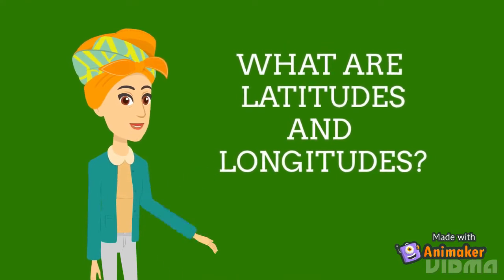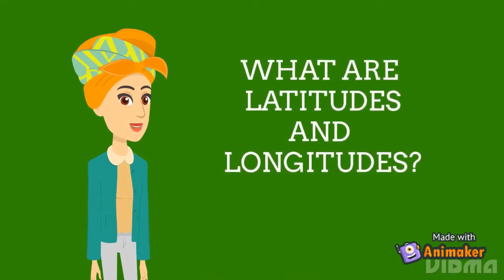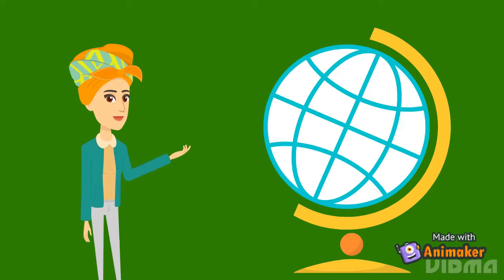But first, let's start with, can you tell me what is this thing that you see on the screen? Yes, that is a globe. Because we can't go on the Earth's surface and locate a place, the geographers had invented a miniature model of the Earth known as the globe.